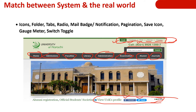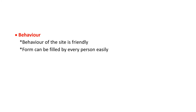The main system icons include folder, tab, radio, mail, badge, notification, pagination, save icon, gauge meter, and switch toggle. The website header includes email, Facebook, MCN, sitemap, directory, Home, Admissions, Faculties, Library, Administration, Examination, Alumni, and Journals. The university profile connects with Facebook and Twitter.